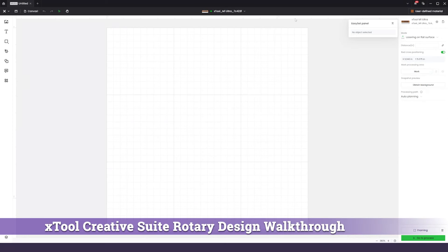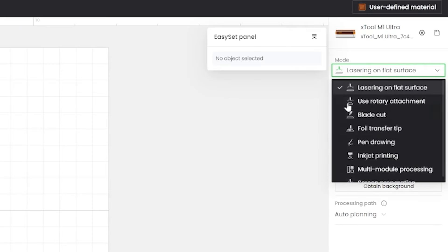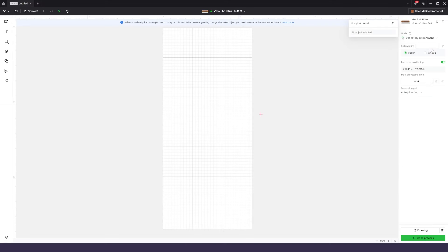While you can use Lightburn with most Xtool machines, I've actually grown fond of using the Xtool Creative Suite instead. It's just easier to interface directly with Xtool's products. Rotary control can be confusing enough as is, so why make it worse? I'm going to walk you through the steps of getting your tumbler design set up to engrave. When you start a new project, you'll start in the Lasering on a Flat Surface mode by default. Click on the dropdown over to the right-hand side and change it to Use Rotary Attachment. The project's work area is going to change to be taller than it is wide.